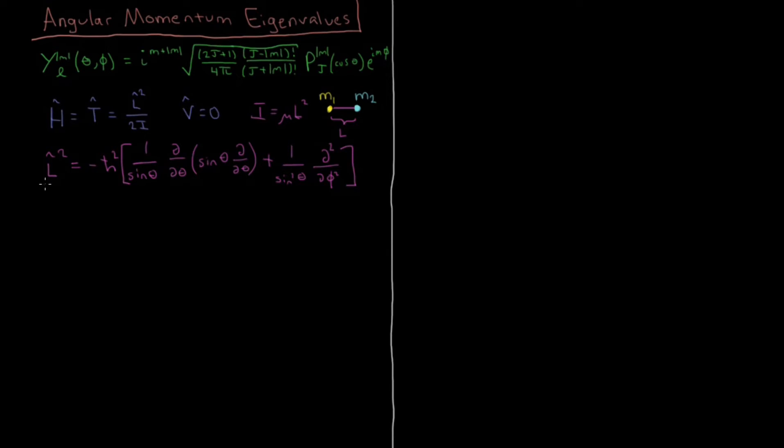times second derivative with respect to phi. So this is the explicit form of the L squared operator, it's very gaudy and long, and if you wanted to actually calculate the eigenvalues of the spherical harmonics for this L squared operator, that would be quite an intensive algebraic thing to do, but you could do it, and given enough time,